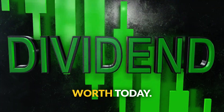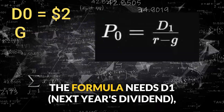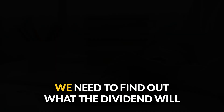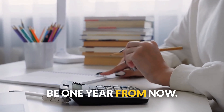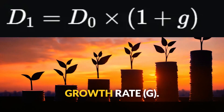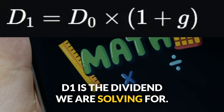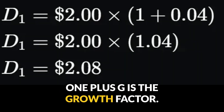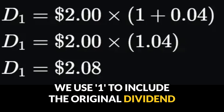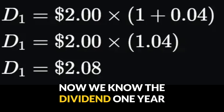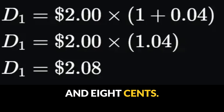You might notice we have a problem: the formula needs D1, next year's dividend, but we only have D0, this year's dividend. So our first step is to calculate D1. To do that, we take the most recent dividend D0 and grow it by our growth rate g. D1 is the dividend we are solving for. D0 is the dividend that was just paid, which is two dollars. One plus g is the growth factor — we use one to include the original dividend amount and add g, our four percent, to calculate the growth on top of it. Now we know the dividend one year from now will be two dollars and eight cents.